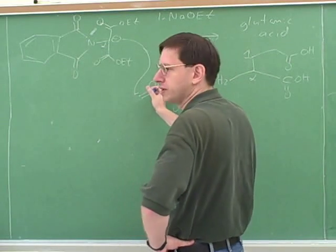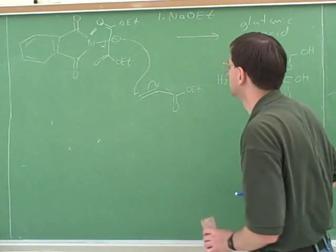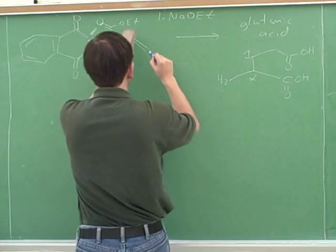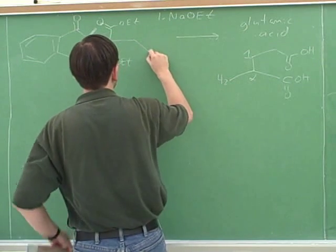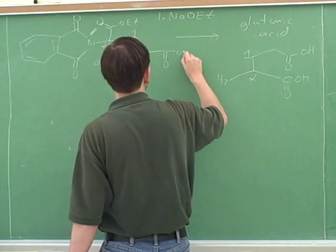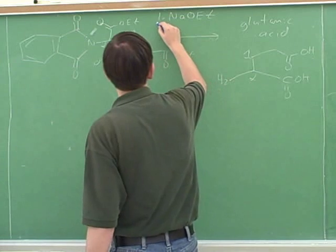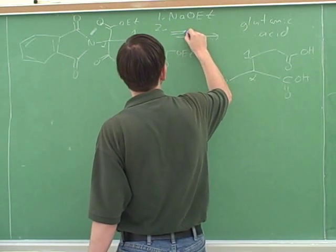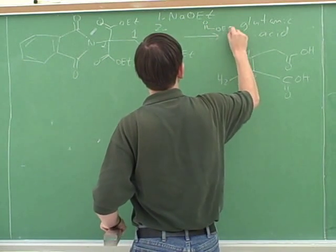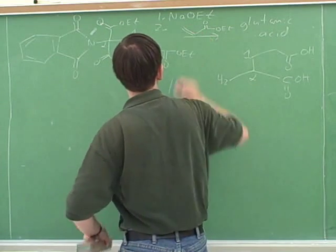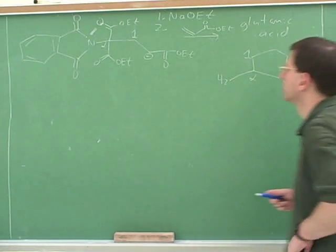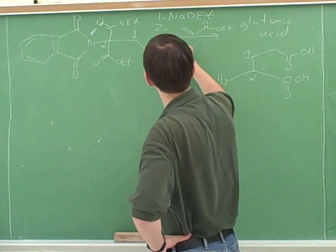So that allows them to attach this. Now the number one is attached like this. I'll put a negative charge here. And then you just do H3O plus heat.